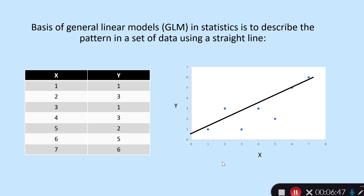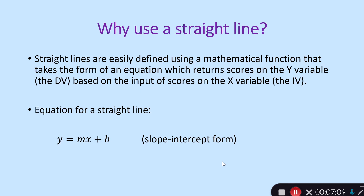As you can see, I've fitted a best-fit line through this data set; it captures the overall trend despite some scatter of points around it. It's a model for what we think the data is doing. Straight lines are easily defined using a mathematical function — an equation — that returns scores on the y variable based on input scores on the x variable. The behavior of straight lines is also well understood mathematically.